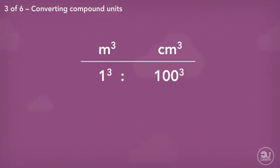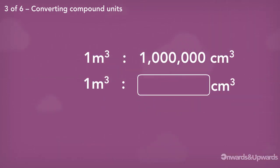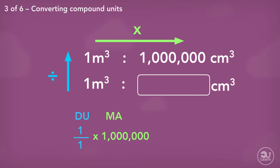Now for the volume, the relationship between meters cubed and centimeters cubed is 1 cubed to 100 cubed, or 1 to 1 million. Using our Duma technique again, we divide up, multiply across. 1 divided by 1, multiplied by 1,000,000 equals 1,000,000 centimeters cubed.